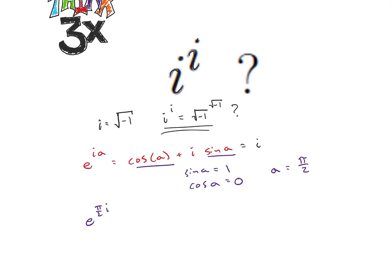So now let's think about this in terms of this. So if this is i, then if I take i to the i-th power, that's the same as taking e to the pi over 2 i and raising that to the i-th power. So now we're getting somewhere.